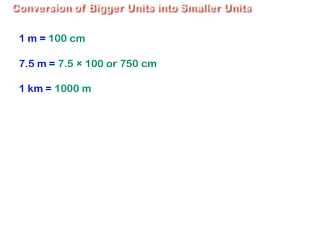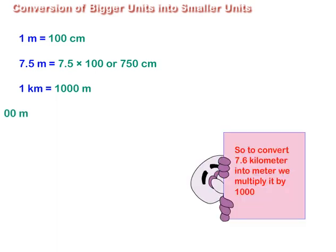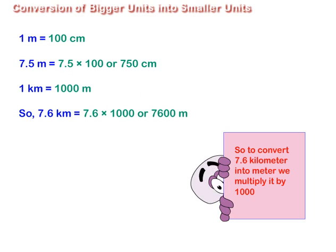1 km is equal to 1000 m. So, to convert 7.6 km into meters, we multiply it by 1000 and get 7600 m.